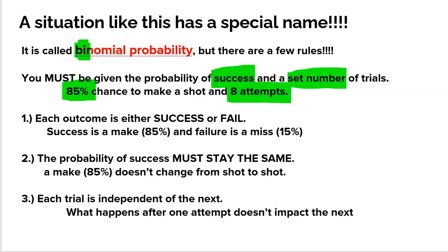But there are a couple of rules. If these rules aren't all true, it might look like a binomial problem but it's not. The first rule is that each outcome of a trial is only allowed to be either success or fail — either it happens or it doesn't. In this case, success is making the shot, which is an 85% chance. Failure is missing the shot, which is 15%. There can't be a third, fourth, fifth, or sixth outcome — there can only be two outcomes: it happens or it doesn't.